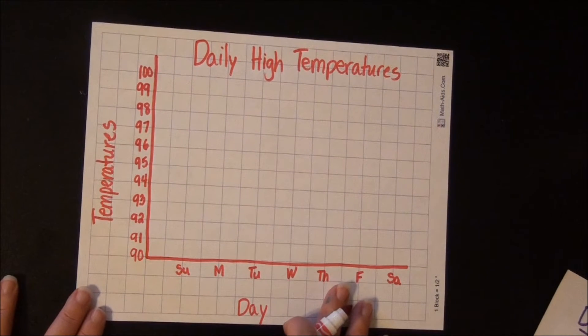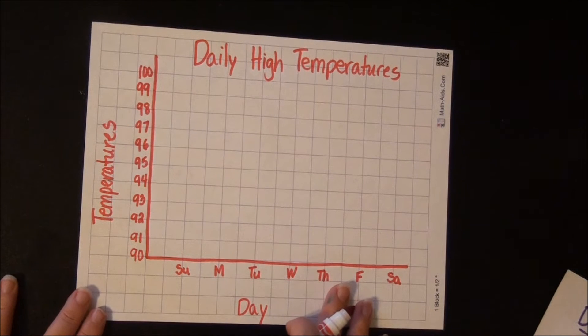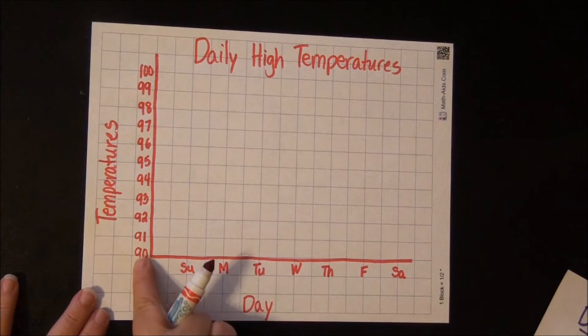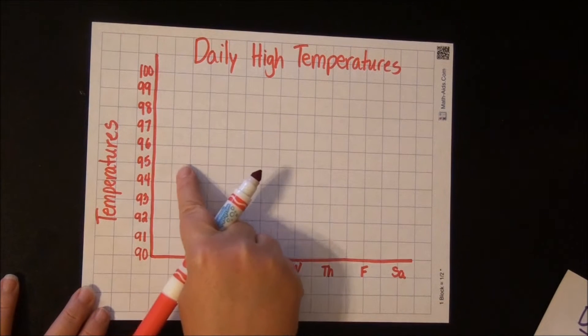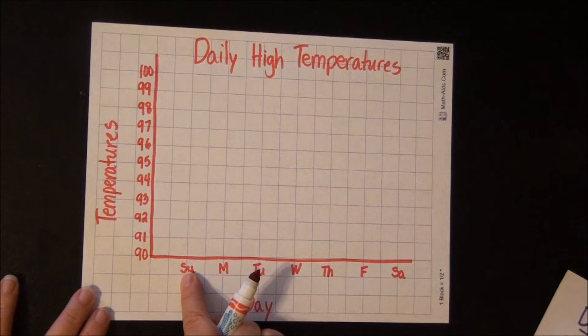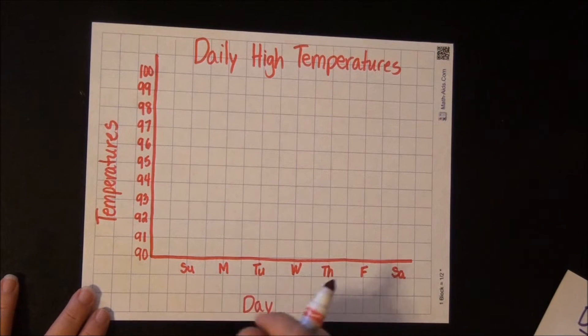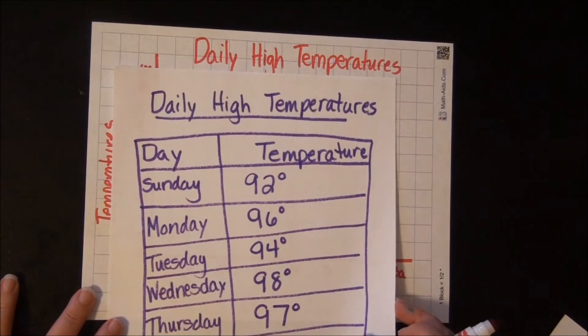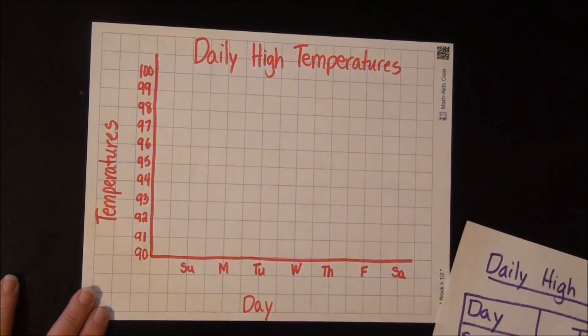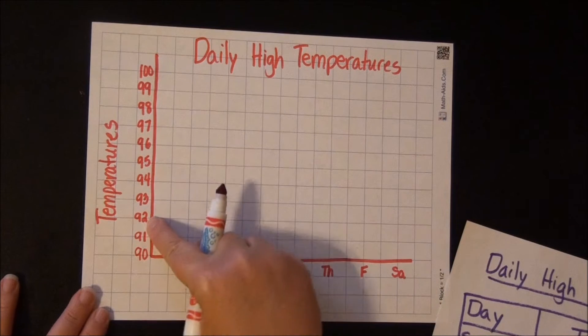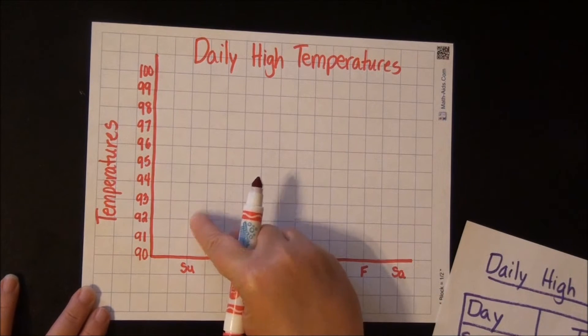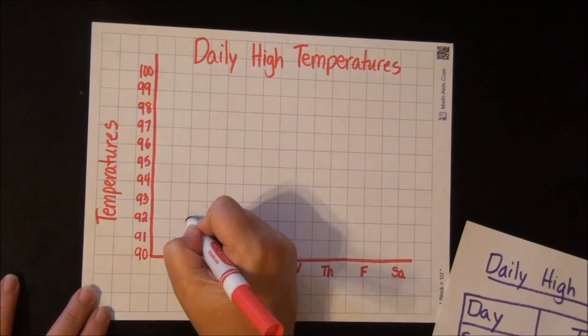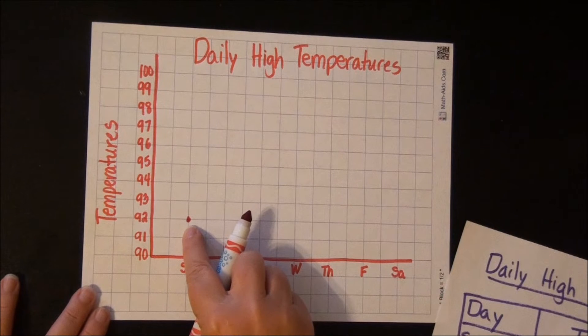Just like on a bar graph, you want to slide up the scale to the number and then slide over to the line for the day that that temperature occurred on. So let's look at Sunday's temperature. It says on Sunday it was 92. So we're going to start at 90, go up to 92, and then slide over to Sunday. You want to put the dot right on the corner where the lines intersect, where they cross over. So there's 92.